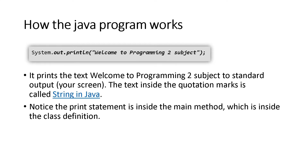The line System.out.println, with open and close parentheses, and inside the double quotes 'welcome to programming subject,' prints that text to standard output — which is your screen, the console. The text inside the quotation marks is called a string in Java. Notice the print statement is inside the main method, which is inside the class definition. System is a class, out is a method, and println is an instance of the class System. Its main behavior is to print whatever is inside the parentheses; if it's a string, enclose it with double quotes. We will practice more of System.out.println in our succeeding topics.